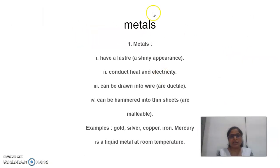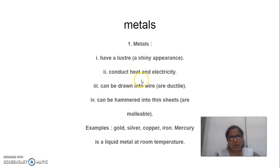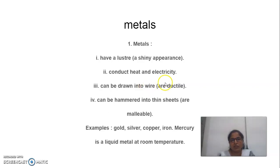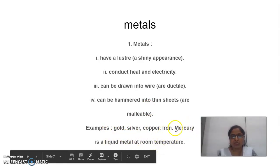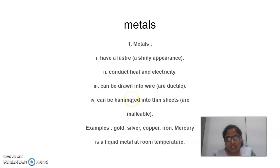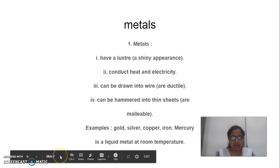Next, we will see metals. Metals have lustre — that is, a shiny appearance. They conduct heat and electricity. They can be drawn into wire — they are ductile. For example, gold can be made into wire. They can be hammered into thin sheets, like aluminium — they are malleable. Examples include gold, silver, copper, iron. Mercury is a liquid at room temperature and is used in thermometers in chemical and physical laboratories.